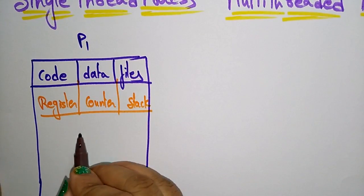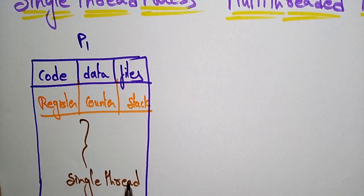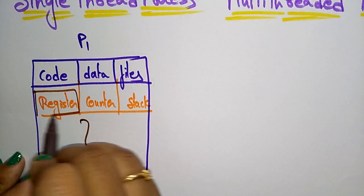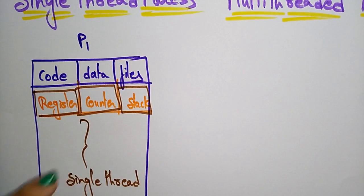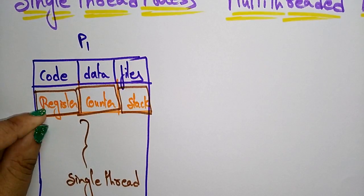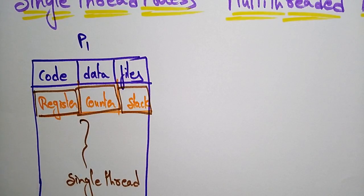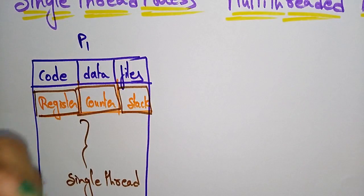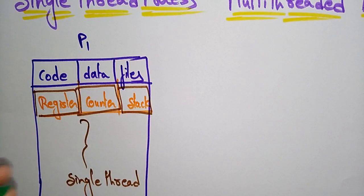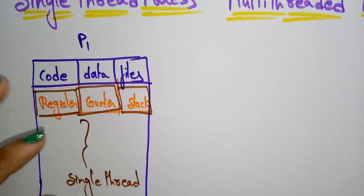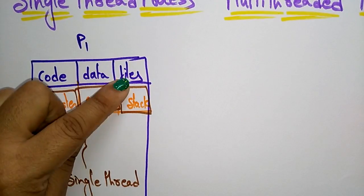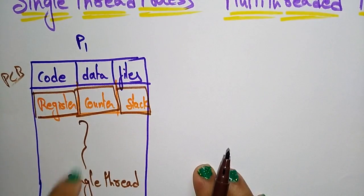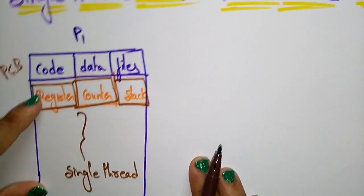If a process has only a single thread, that thread has its own register, program counter, and stack. The register stores data; the program counter holds the address of the next instruction to be executed; and the stack contains temporary data, operating in a last-in-first-out manner. All of these — register, counter, and stack — share the code, data, and files present in the process control block. This is the single-thread process.